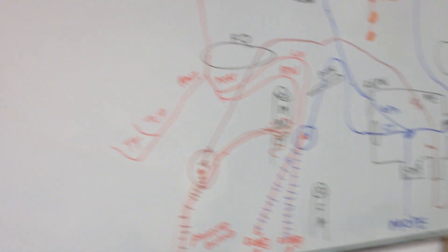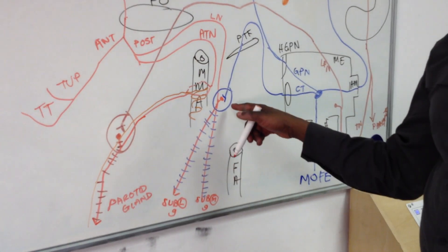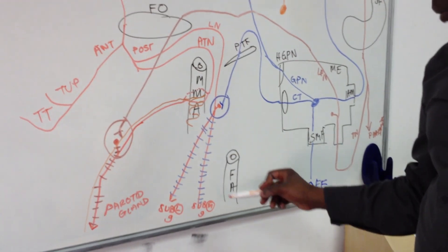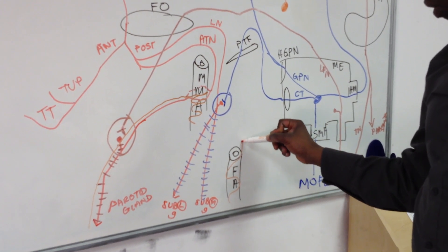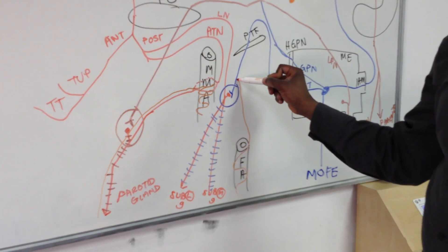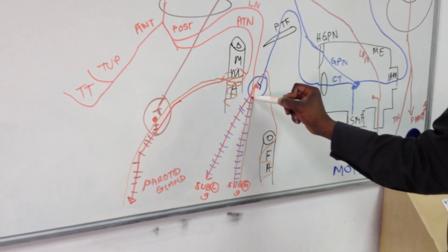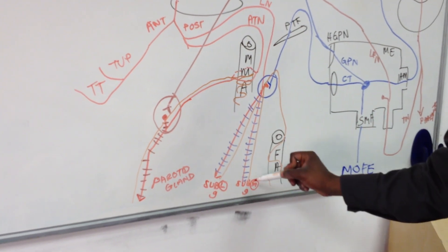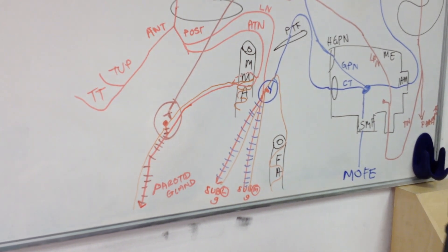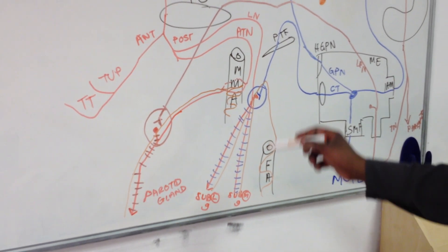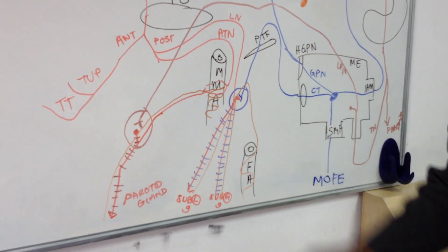The next one is the submandibular ganglion. Again, via a local nerve — the facial nerve. The facial nerve comes, jumps in, and away it goes in two separate divisions: one down to the submandibular gland and the other to the sublingual gland. This is the submandibular ganglion — we've done both submandibular and otic ganglia.